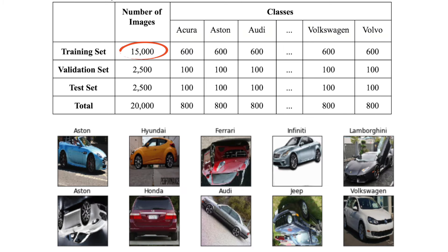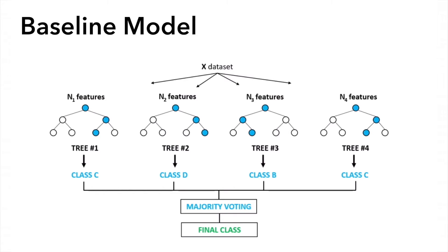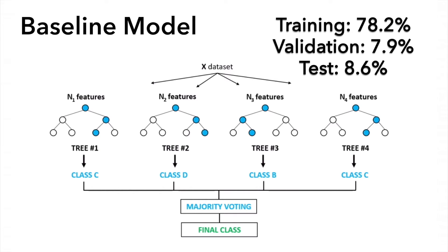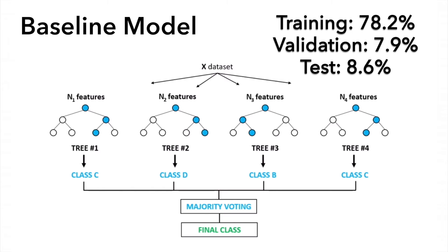Now we have 15,000 training images and 2,500 each for validation and test data, where the 25 classes are equally distributed in these datasets. The team used a random forest classifier as the baseline model. With 78% training accuracy and 8% validation accuracy, a test accuracy of 8.6% was achieved after preliminary tuning.